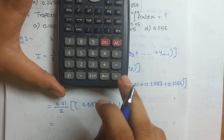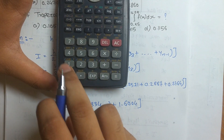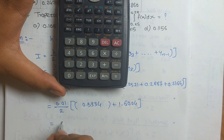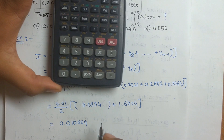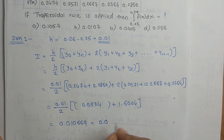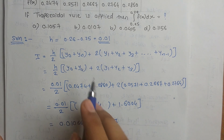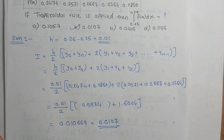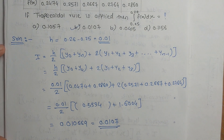Adding 0.5334 and 1.6004 gives 2.1338. Multiplying by 0.01/2 gives 0.010669. Rounding to 4 decimal places gives 0.0107. So the answer is option B. In this way you can solve examples using the trapezoidal rule.